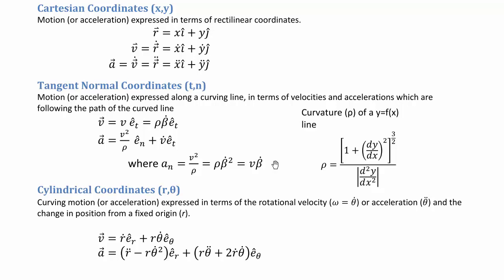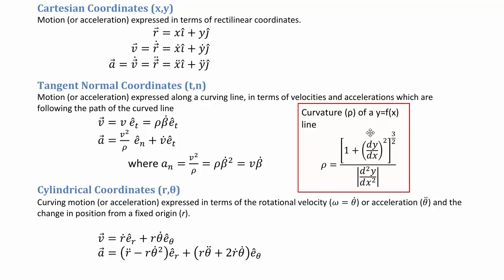We need an acceleration to push the particle into the curved path; otherwise it would shoot off along a tangent line. We have one additional equation to find the curvature of any line — not specific just to tangent-normal. If you have a curved path expressed as a function y of x, you can apply this equation to solve for the local radius of curvature ρ at the location x where this particle is.